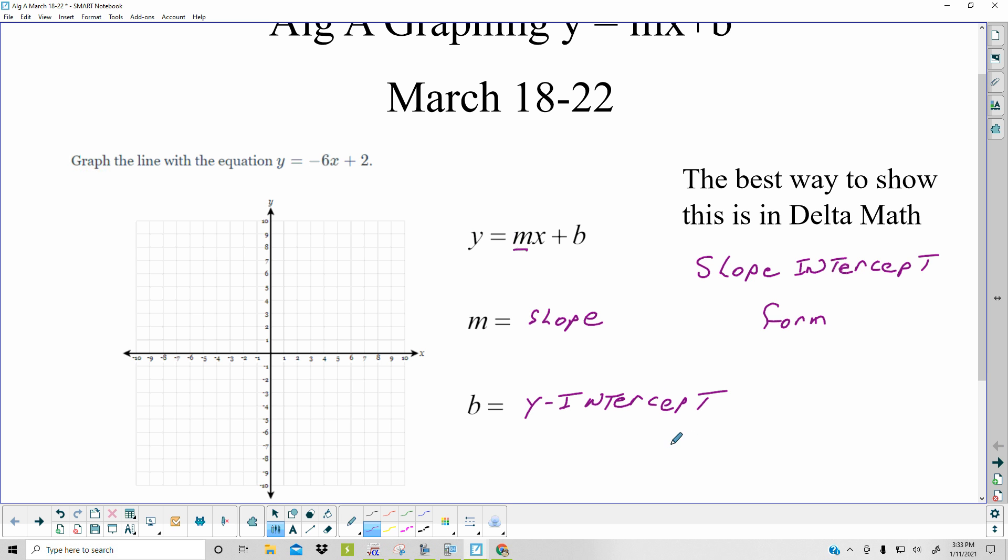Now when something is an intercept, it means if you were to intercept a plane, that means you're going to catch it. In this case, what it means, the y is this axis, the x is this axis. These are called an axis. So this is the y-axis, this is the x-axis.